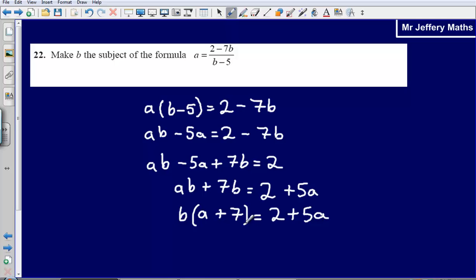So now I have got b bracket a plus 7 equals 2 plus 5a. My last step is going to simply be to divide both sides by a plus 7. That will leave me with b on its own on one side of the equal side and so my final answer will be b is equal to 2 plus 5a divided by a plus 7.